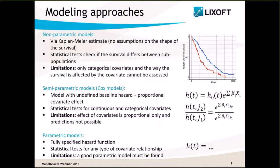The non-parametric approach does not require assumptions on the shape of the hazard or survival. The idea is to split the population into categories, compare the Kaplan-Meier estimate for different subpopulations, and perform statistical tests to check if the survival differs. The main limitations are that only categorical covariates can be tested, and the way survival is affected by covariates cannot be assessed.